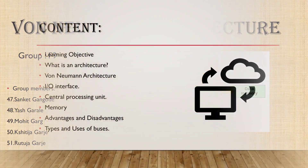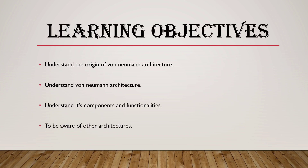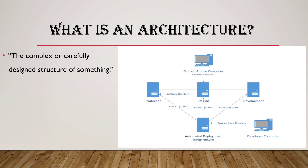In this video, the following points will be explained. Let's begin with the Learning Objectives. First, understand the origin of Von Neumann's Architecture. Second, understand Von Neumann's Architecture. Third, understand its components and functionalities. Fourth, to be aware of other architectures. Architecture is basically a complex or carefully designed structure of something.